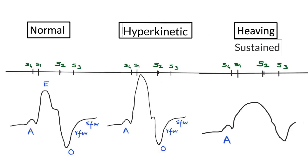This is the pictorial summary of the three types of common LV apical impulses seen in clinical practice: normal; hyperkinetic, in which there is a rise in amplitude but the duration is the same as normal; and sustained or heaving type, in which the duration is increased but the amplitude is not.